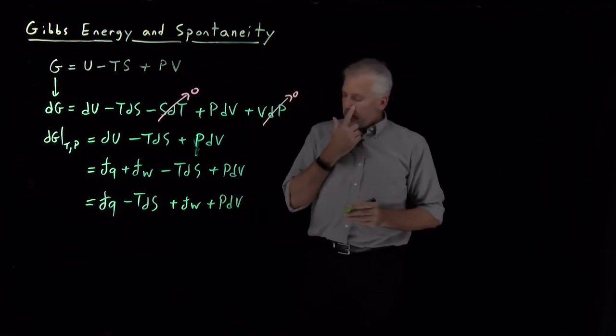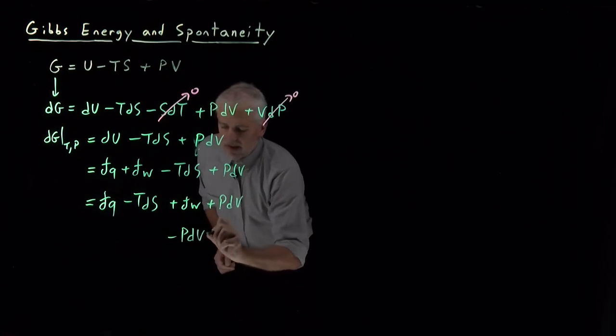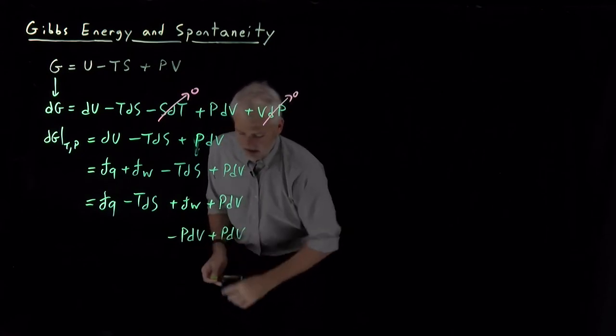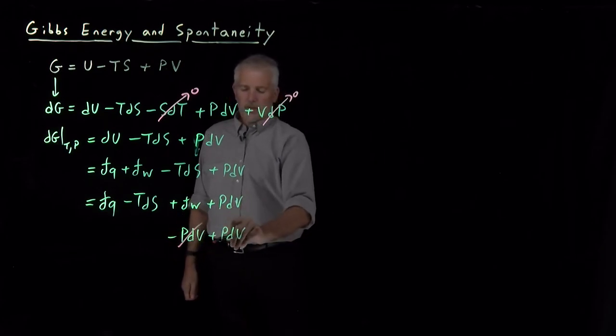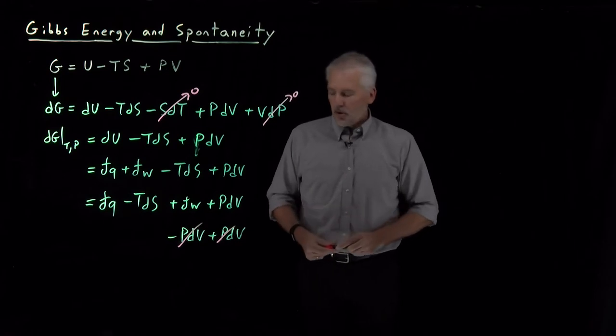We can do a couple of things. The easier one: I can write work as -PdV, so this term will cancel with the +PdV term. The work cancels the PdV term, so those two terms go away.